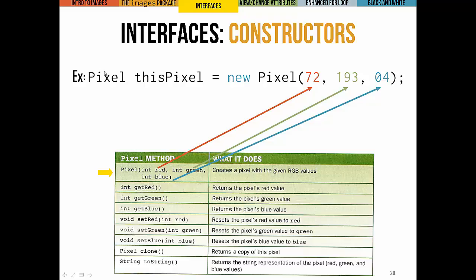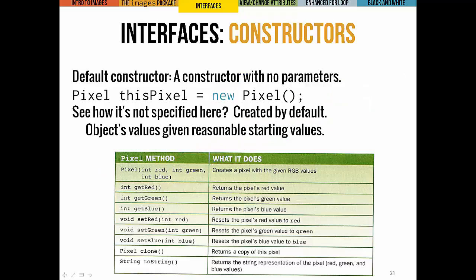So if we were making a new pixel, we might create it like this: Pixel thisPixel = new Pixel(72, 193, 4). We've been doing this the entire time — we just didn't know this was called a constructor, that this was a method. When we instantiate a new object, we're calling a constructor method defined in the class, which is only called a single time. Whenever a constructor has no parameters, we call that the default constructor. If it's not specified, the compiler includes it automatically for any class — calling the default constructor gives you a set of default values for the contents of the object.